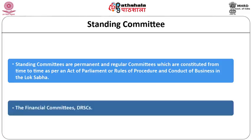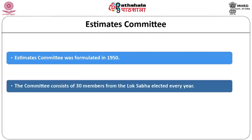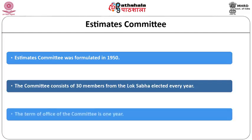The financial committees are three: the Estimates Committee, the Public Accounts Committee, and the Committee on Public Undertakings. The Estimates Committee was formulated for the first time in 1950. It consists of 30 members from the Lok Sabha, elected every year, with a term of office of one year. The committee is headed by a chairperson elected from among its members. A minister cannot be elected as a member of the committee.